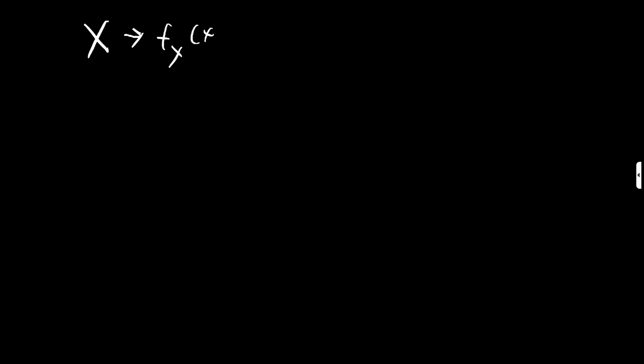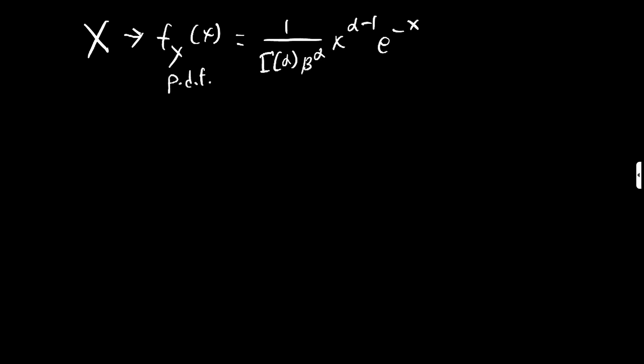Suppose that you have some random variable x, and this follows a gamma distribution, meaning that the probability density function, the PDF, of this random variable is going to be 1 over gamma of alpha, times beta to the alpha, times x to the alpha minus 1, times e to the negative x over beta.